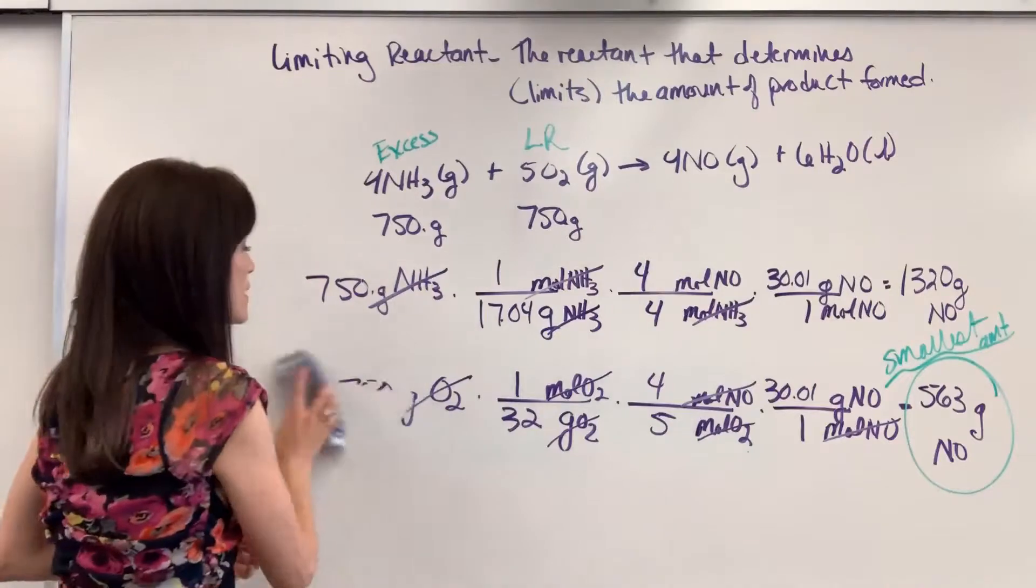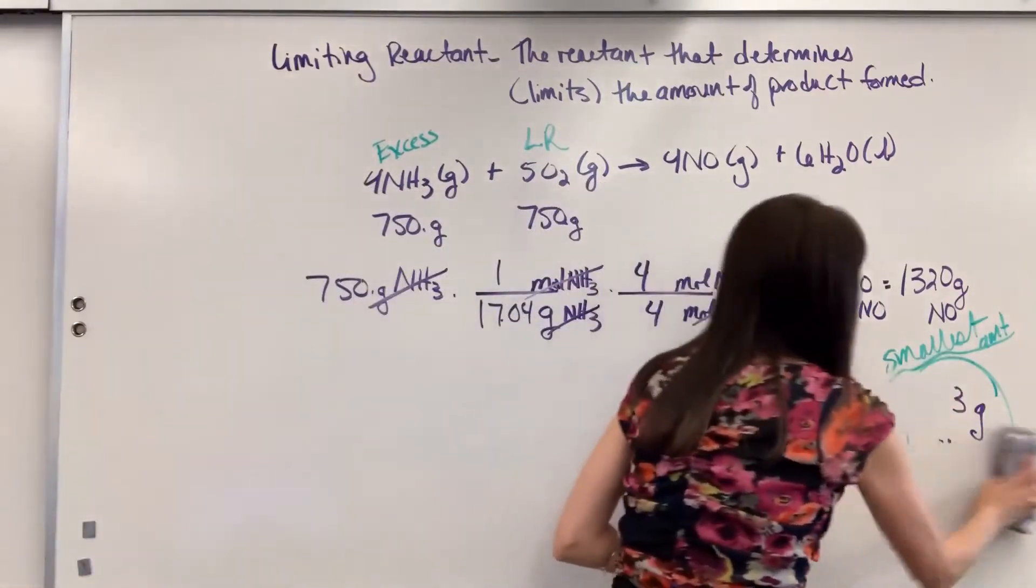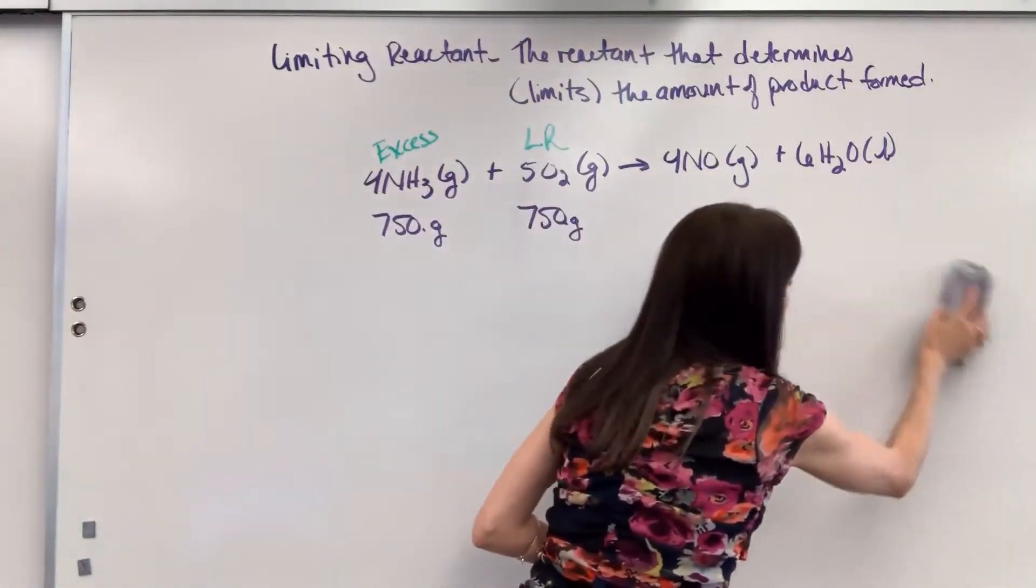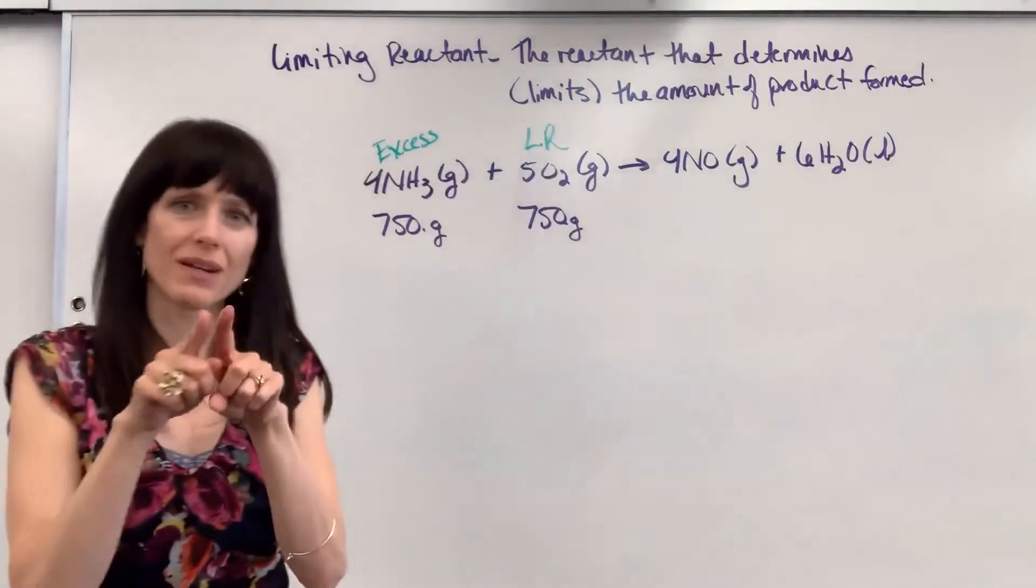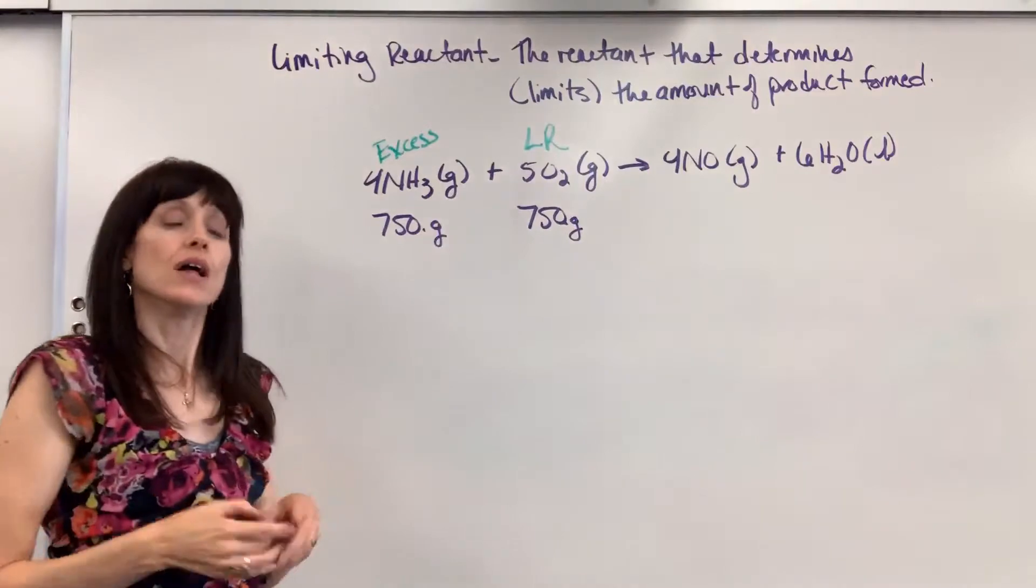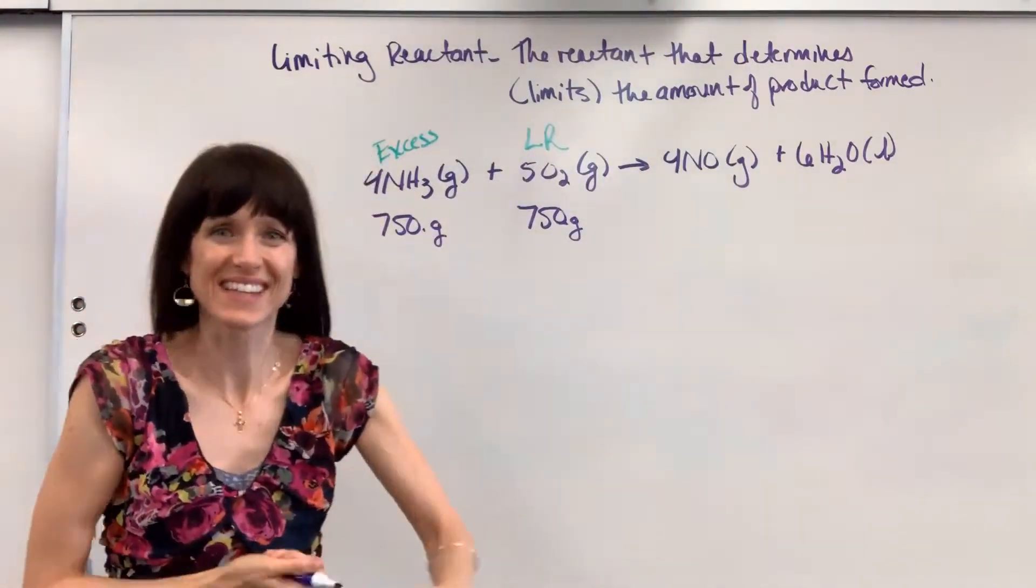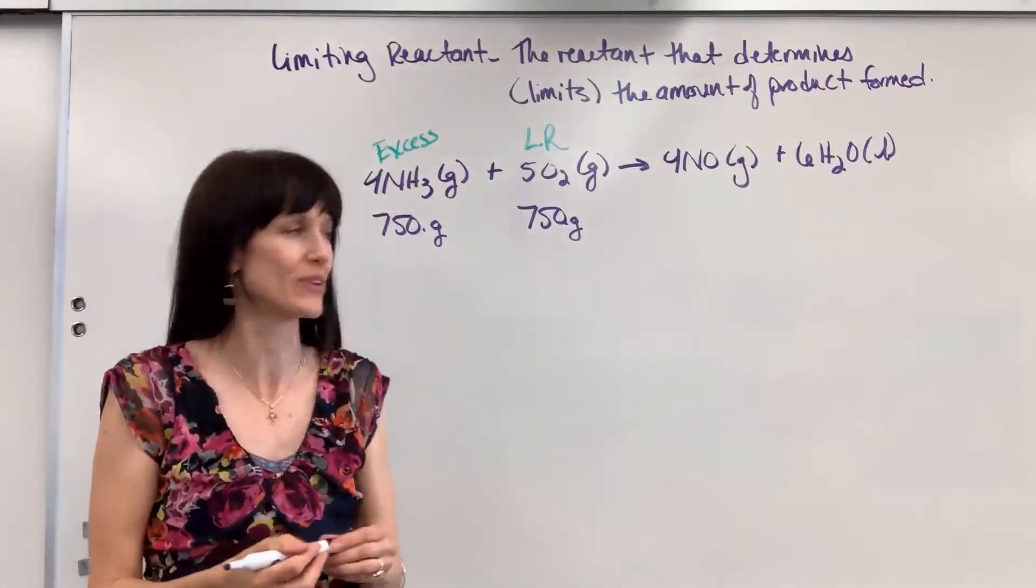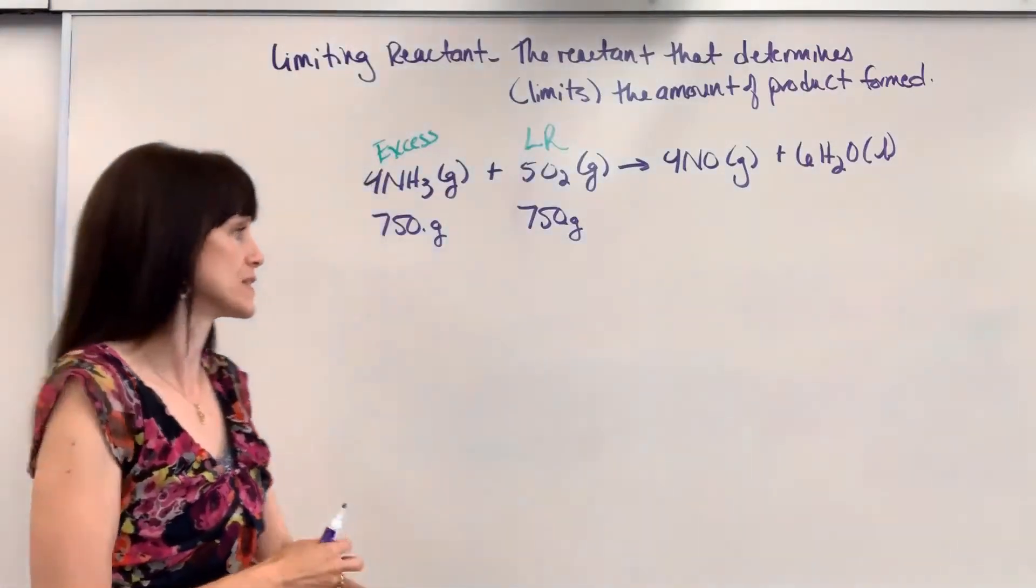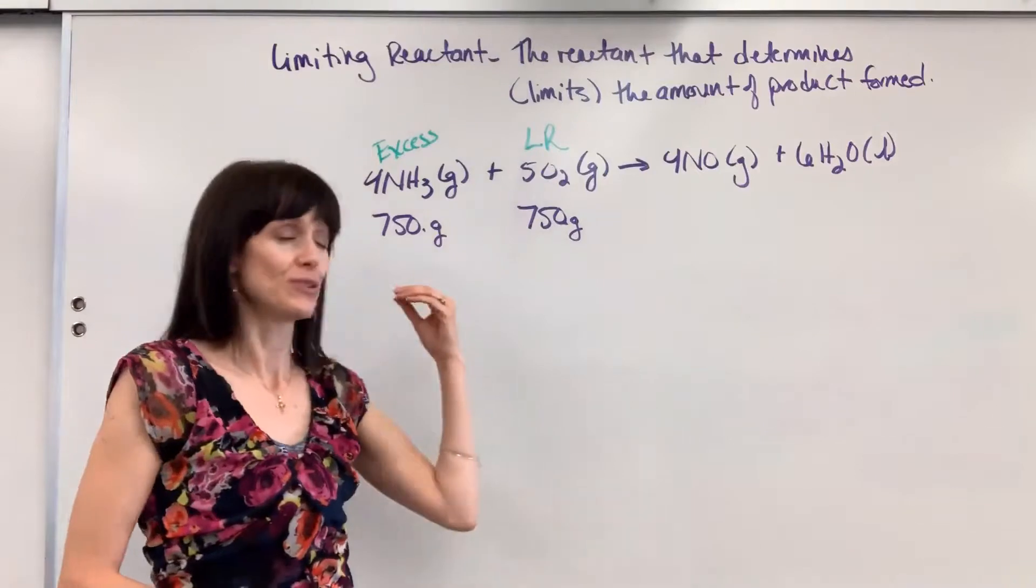Now, the second way to do this, I would say one out of every five, about 20% of my students like this. What you do is you compare the two reactants to one another. We're going to compare the ammonia to the O2. The reason why I don't use this one is because you have to think. And very honestly, I try to think as little as possible. This one to me, if I'm going to make a mistake, I'd be more prone to make a mistake on this one. But like I said, some students love it. So I'm going to show you a second way to figure this out.